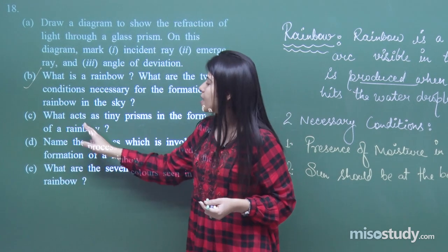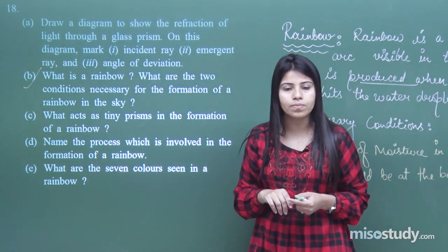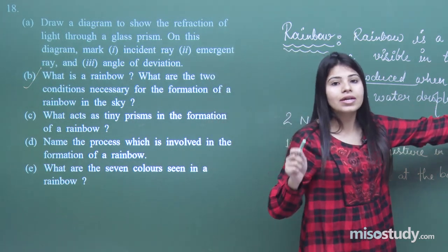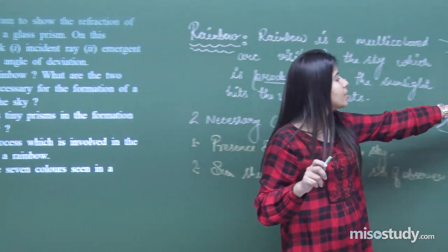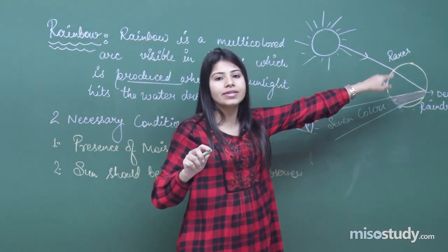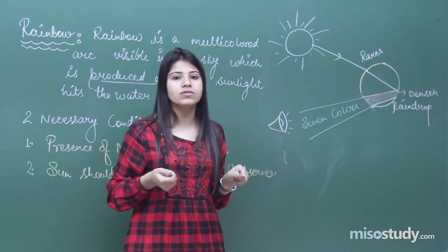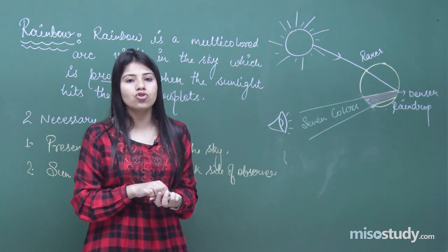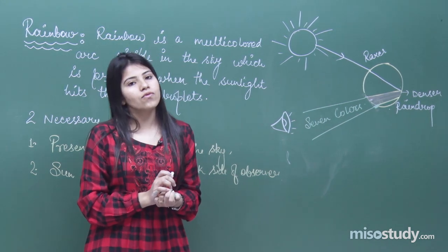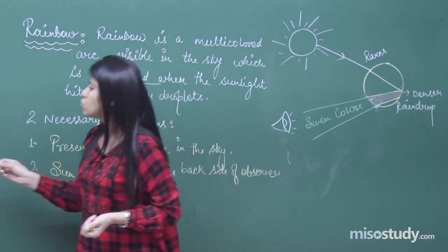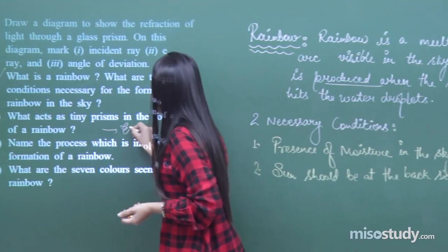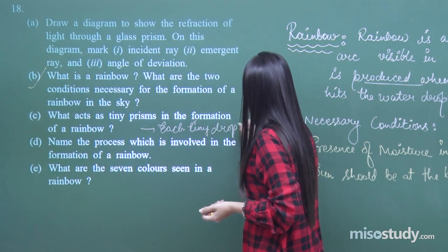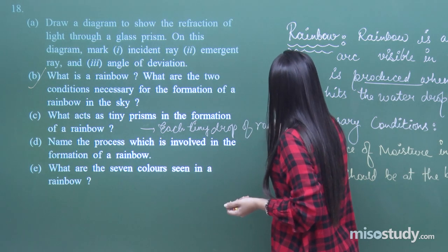The next question asks: what acts as a tiny prism in the formation of a rainbow? I have shown with a diagram that dispersion is happening — here the raindrop is acting as a little prism. Each tiny drop of rain acts as a small prism.